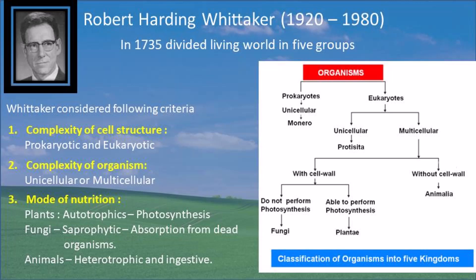From 1920 to 1980, Robert Harding Whittaker was an American ecologist. In 1969, he divided living organisms into five groups — whereas Copeland had divided them into four kingdoms. For this classification, Whittaker considered some criteria. Looking at the picture on the screen, this is Whittaker's classification. The first criterion he considered was the complexity of cell structure.